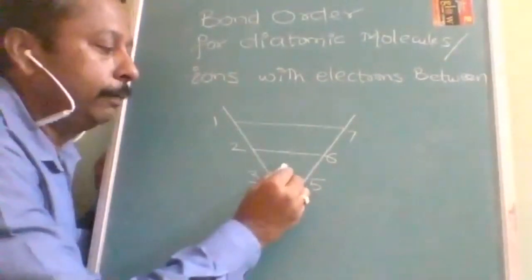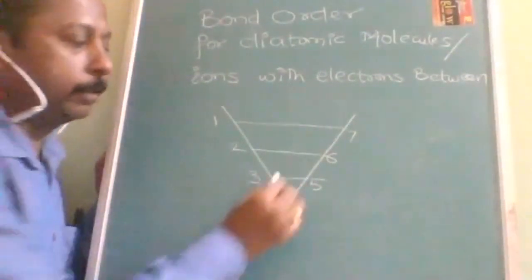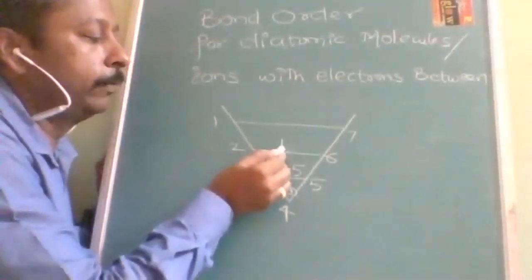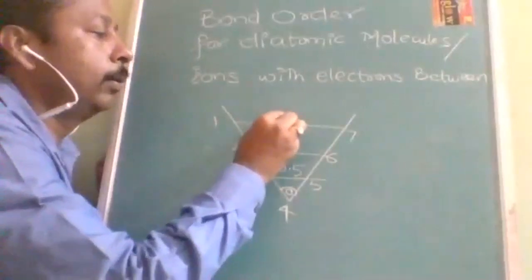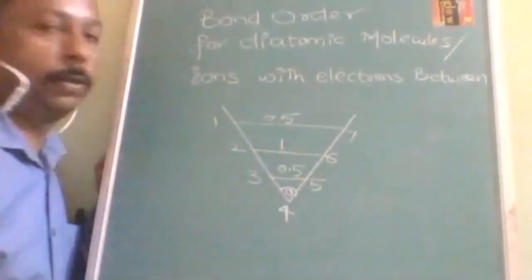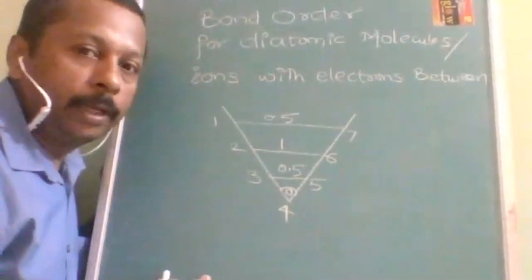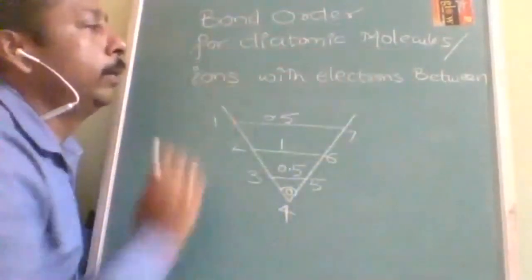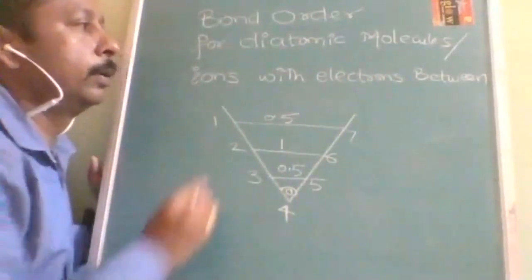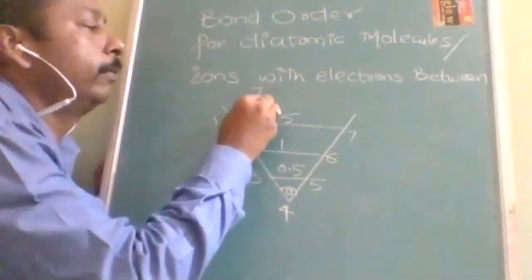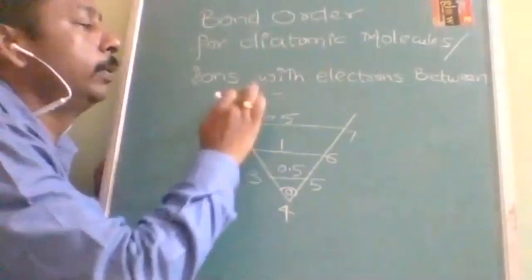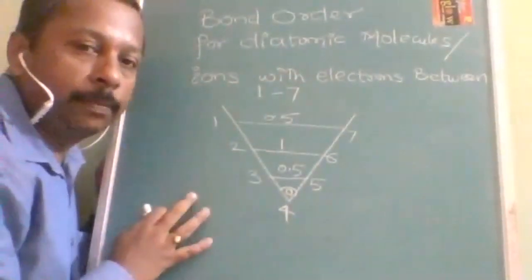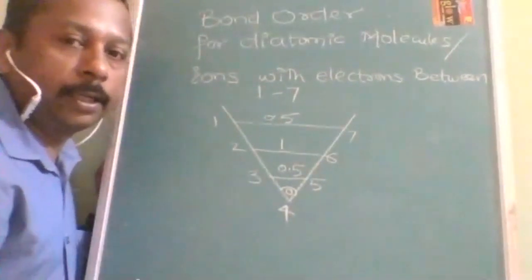OK, now let us take 3 and 5. For the 3 and 5 it is going to be 0.5. For here it is 0.5, 1, and here again you have to decrease it. It is equal to 0.5. OK, so with this you will be able to solve the bond order for a diatomic molecular ion with electrons between, OK, between 7 to 1 or otherwise you can say 1 to 7. Above 7 already we have studied previously, below 7, this is the technique understood.